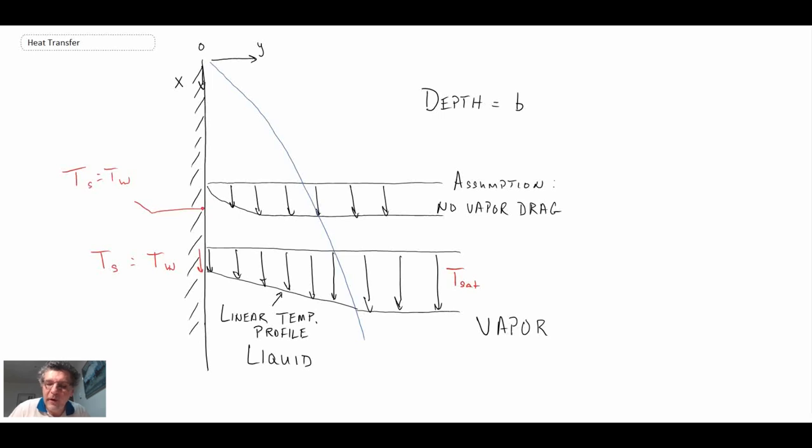So what we can see here, this is the model that Nusselt used to come up with a relationship that enabled him to come up with a convective heat transfer coefficient. First of all, just like before with our model, we had a representation for the thickness of the film, the condensation film, and that was denoted by delta.